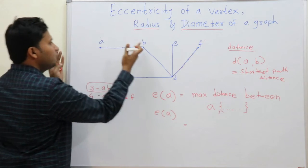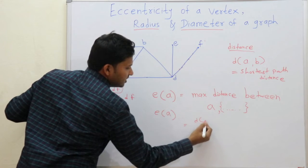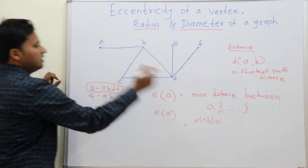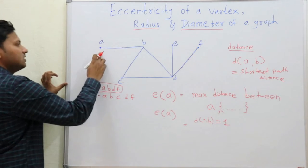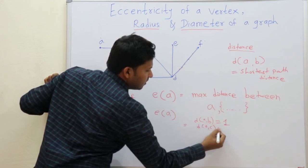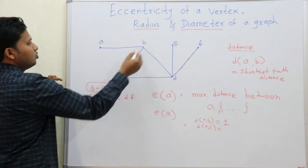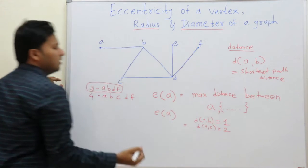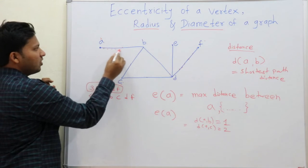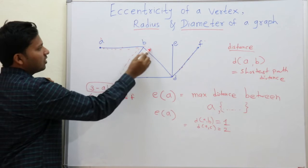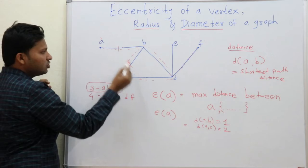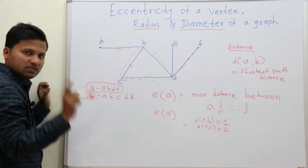First, find out the distance from A to B — that is 1, since there is only one edge. Distance from A to C is 2, taking the shortest path. You can also take a longer path, but you should always take the shortest path — that is the distance.